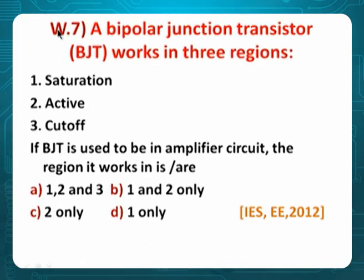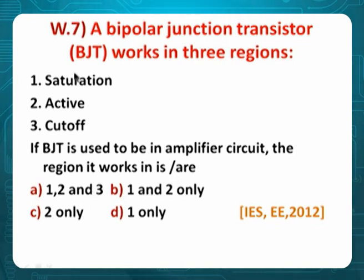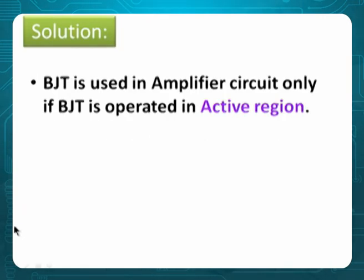Problem 7: For switching versus saturation versus cutoff regions — if BJT is used as an amplifier, in which region does it work? Amplifier means active region — not all three, not two, only the active region. Therefore option C.